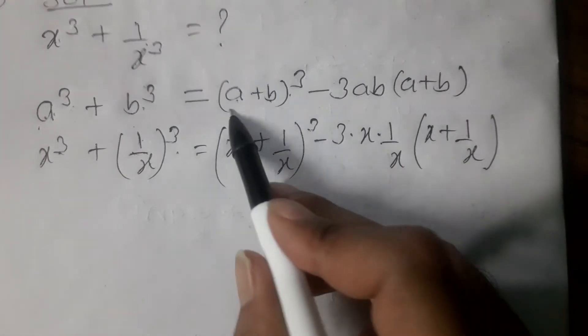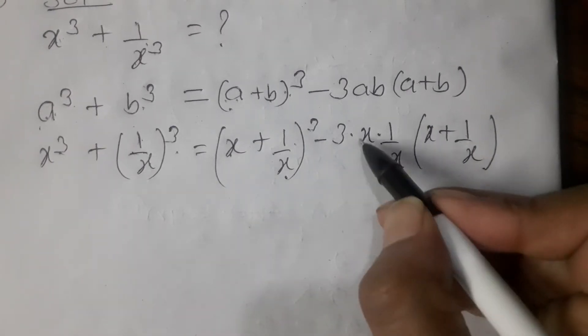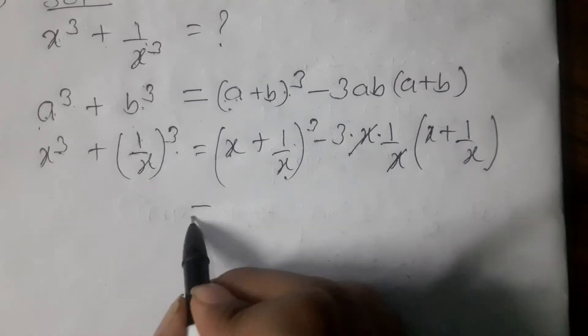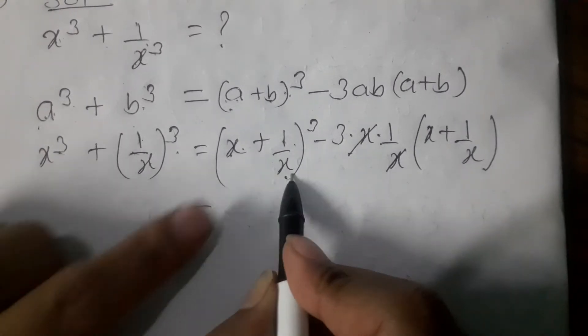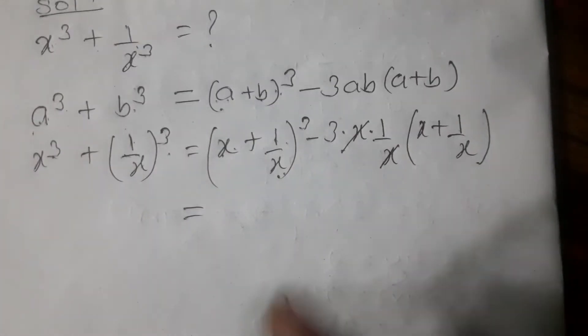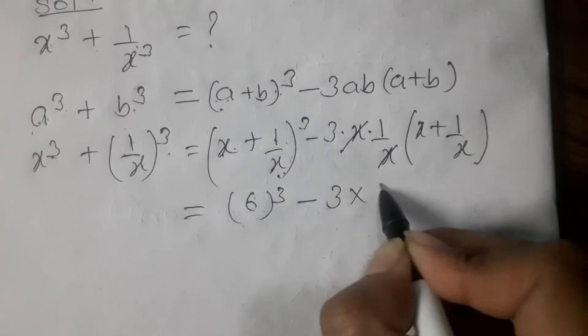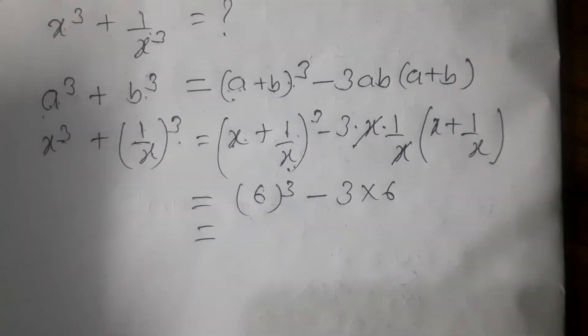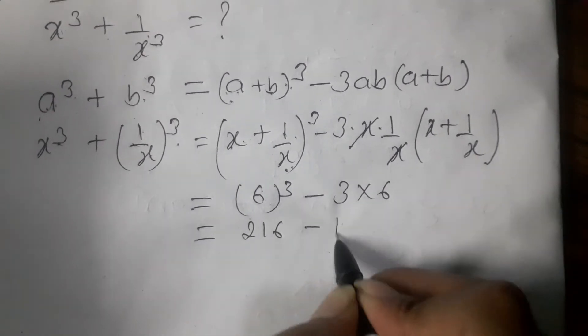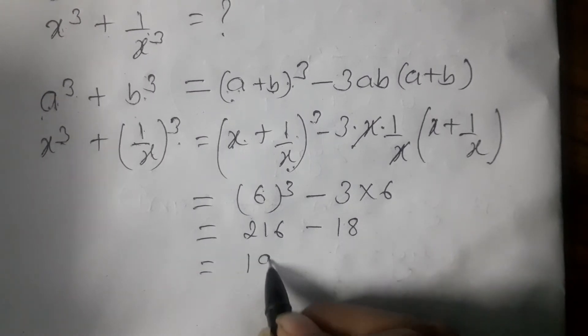6 cube is 216 minus 18, or 216 minus 18 is 198.